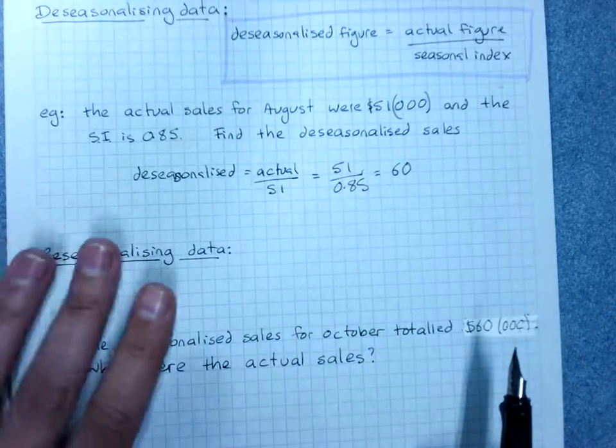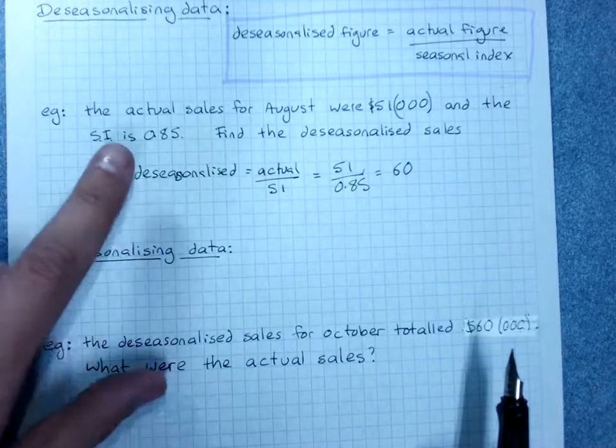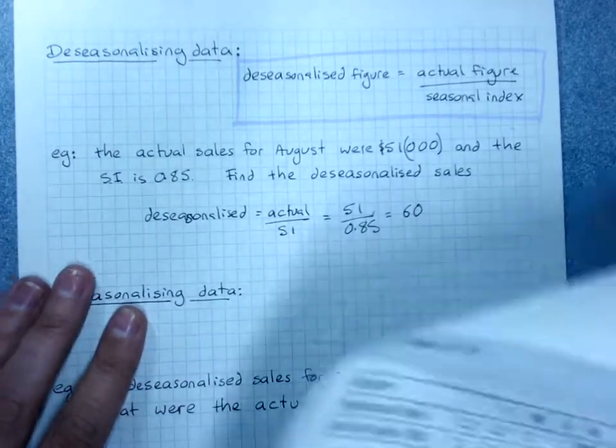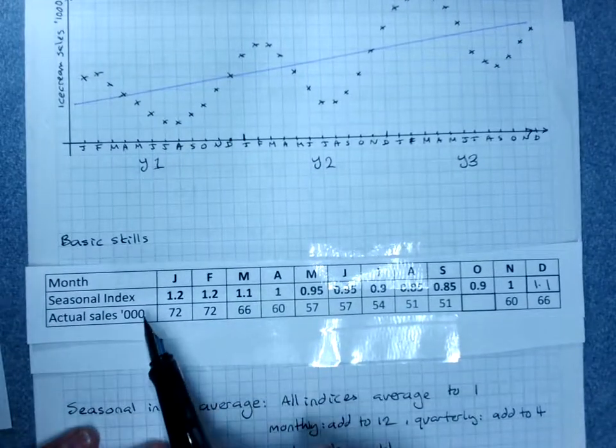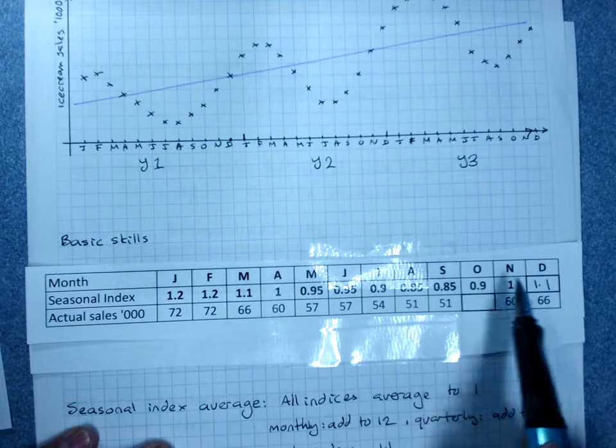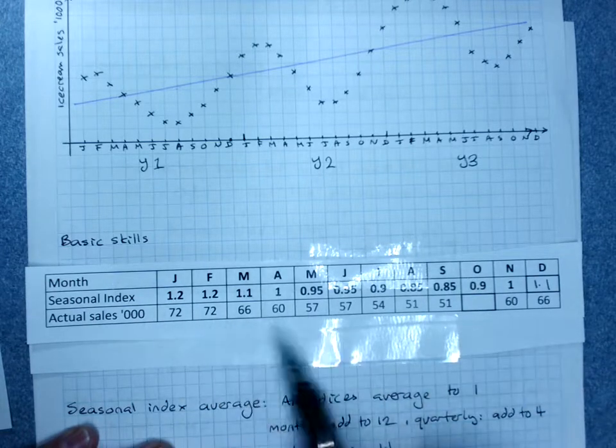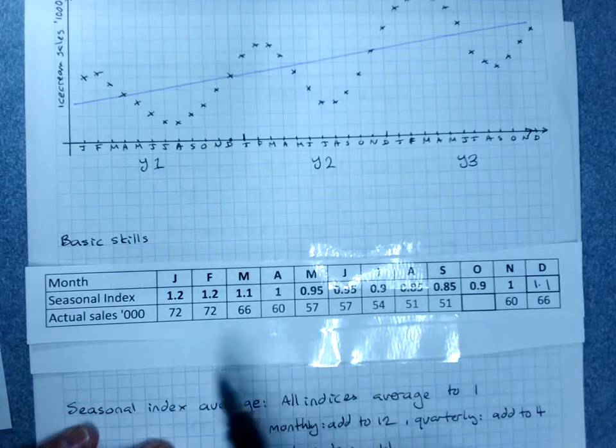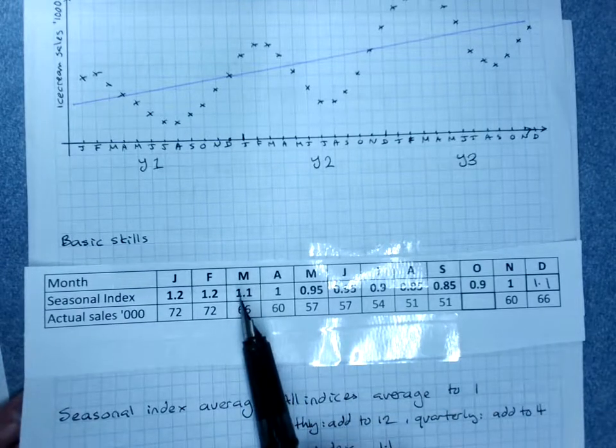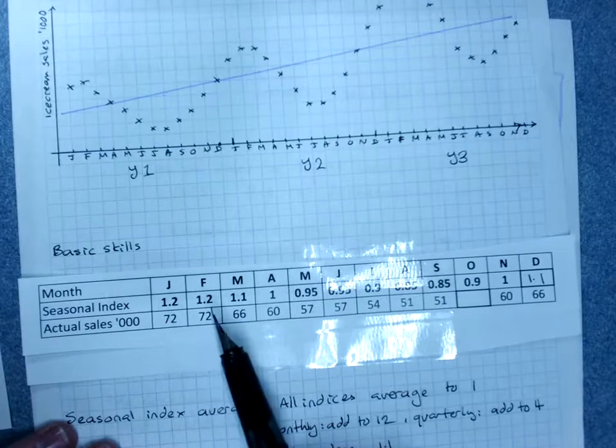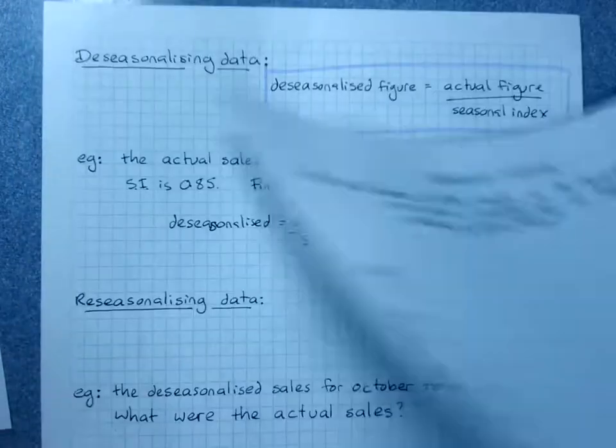Now the big thing about this example is that we normally look over several years to get these indices, whereas I've just sneaked this in for one year. So it will look a little bit funny - we'll keep getting the same numbers here and there. But when we work out the seasonal indices over many years, we'll get a lot more variation.